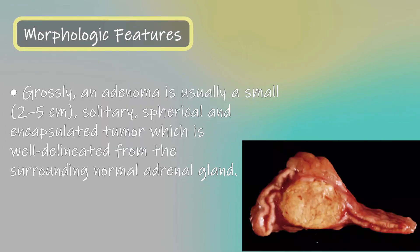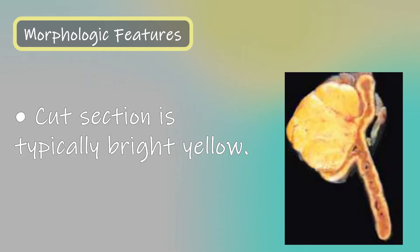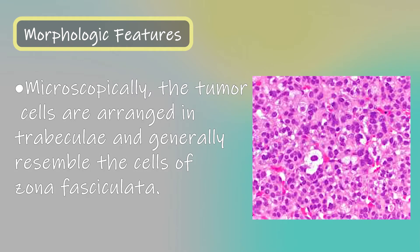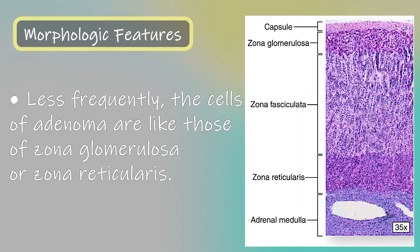Morphologic features. Grossly, an adenoma is usually a small, 2 to 5 cm, solitary, spherical and encapsulated tumor which is well delineated from the surrounding normal adrenal gland. Cut section is typically bright yellow. Microscopically, the tumor cells are arranged in trabeculae and generally resemble the cells of zona fasciculata. Less frequently, the cells of adenoma are like those of zona glomerulosa or zona reticularis.